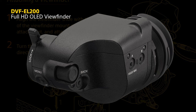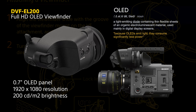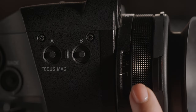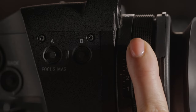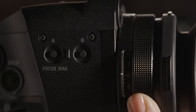The EL200 was first introduced with original Venice and is the same viewfinder used for Venice 2. The viewfinder is 1920 by 1080 OLED and allows for quick motion picture response with minimal blur or ghosting. OLED allows for higher, more accurate contrast ratios because black is off. The viewfinder has a diopter with an indicator adjustment ring, though it does not represent a diopter measurement.